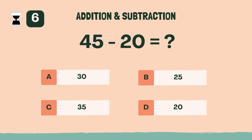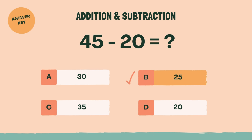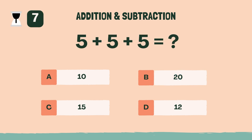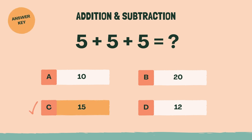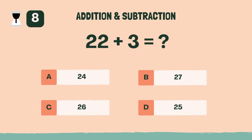What is 45 minus 20? B, 25. What is five plus five plus five? C, 15. What is 22 plus three? C, 25.